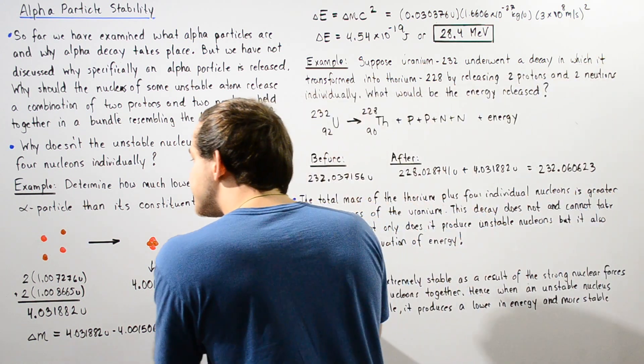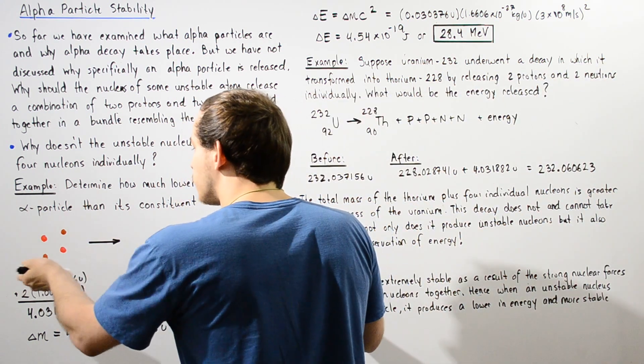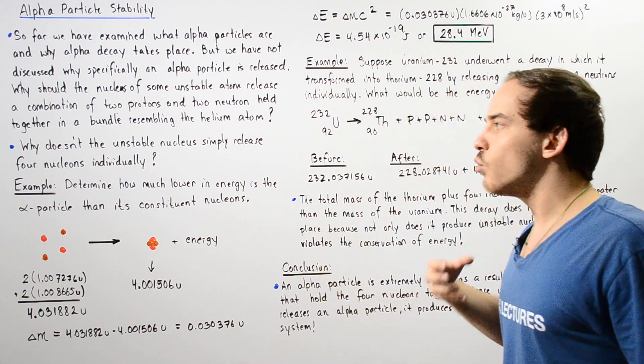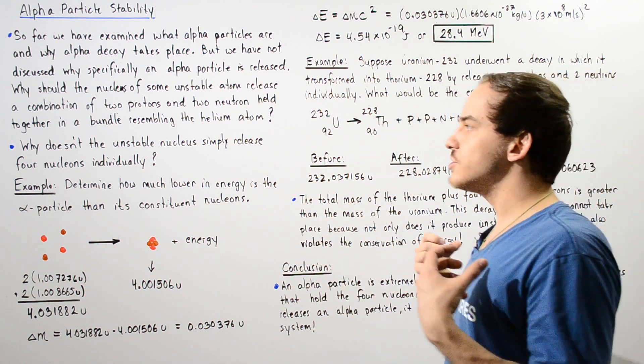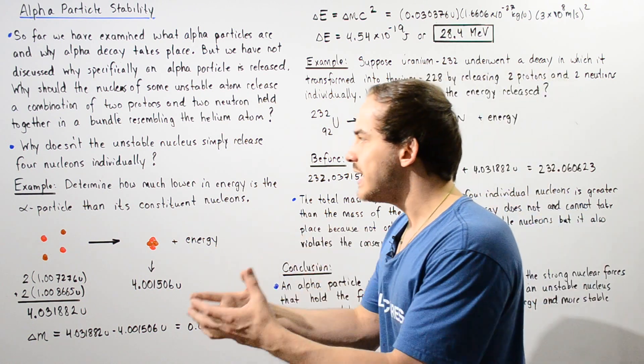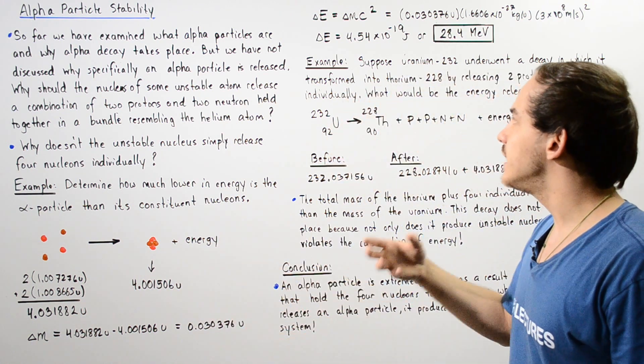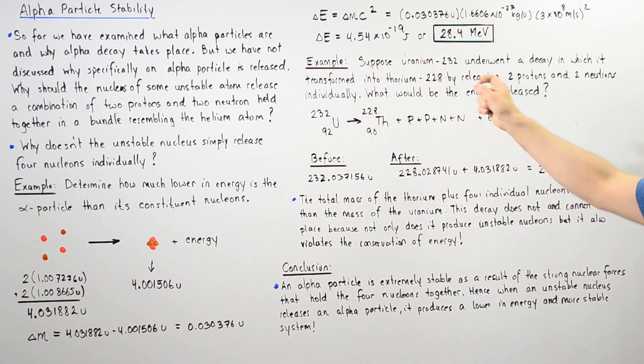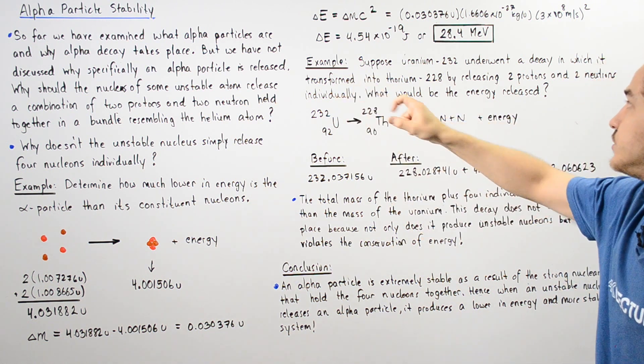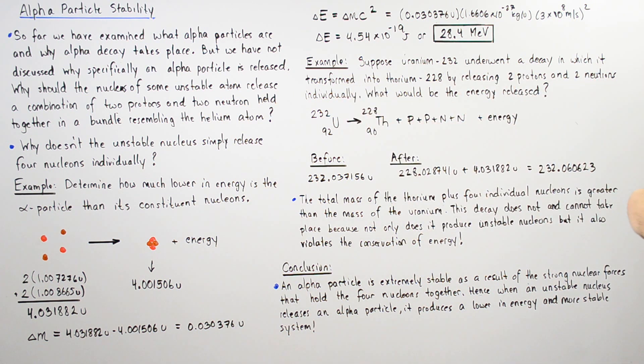So now that we know that this is in fact a favorable reaction, let's examine why our unstable atom doesn't actually dissociate, doesn't actually release our four nucleons individually.